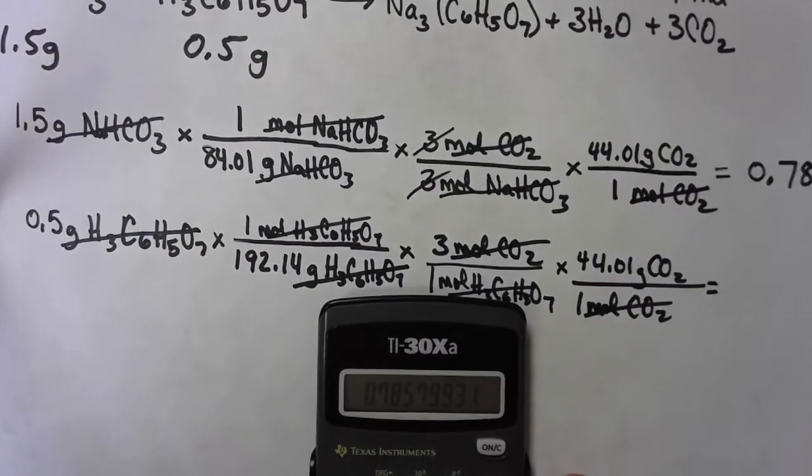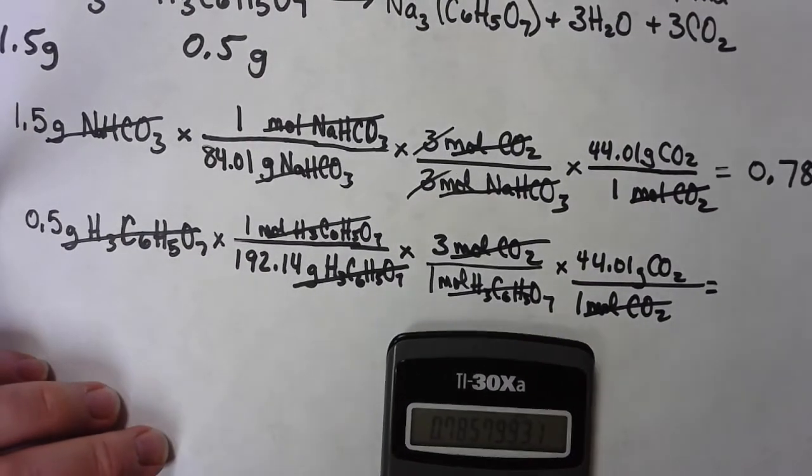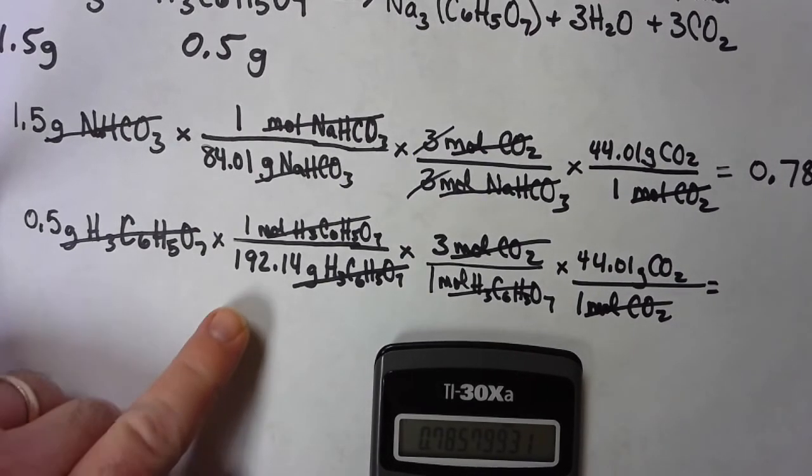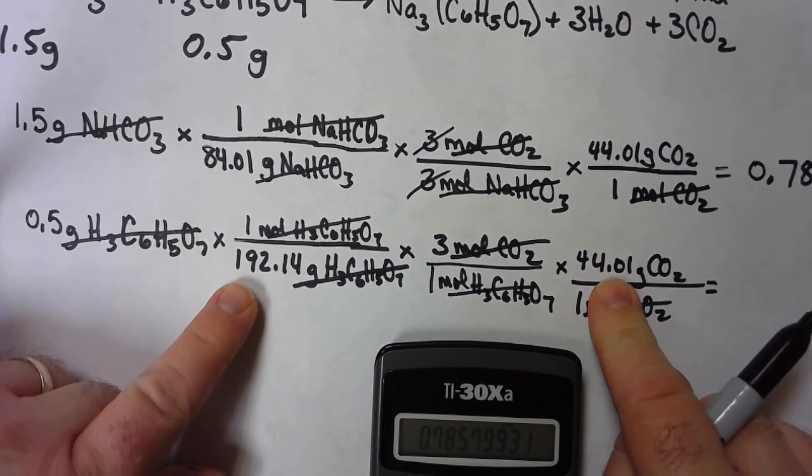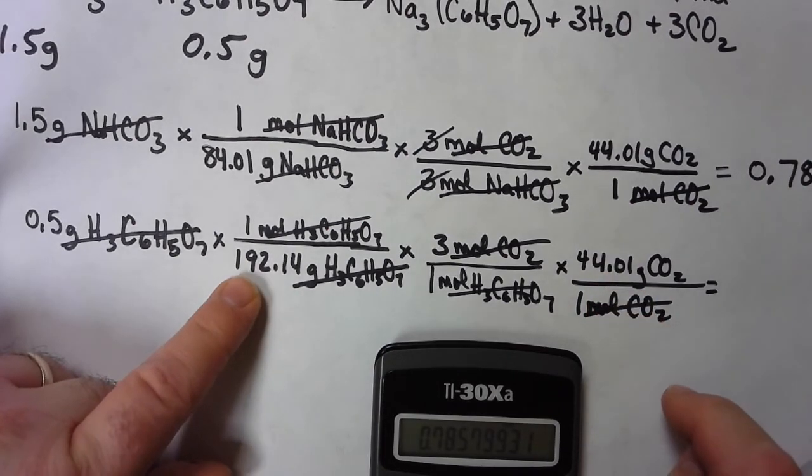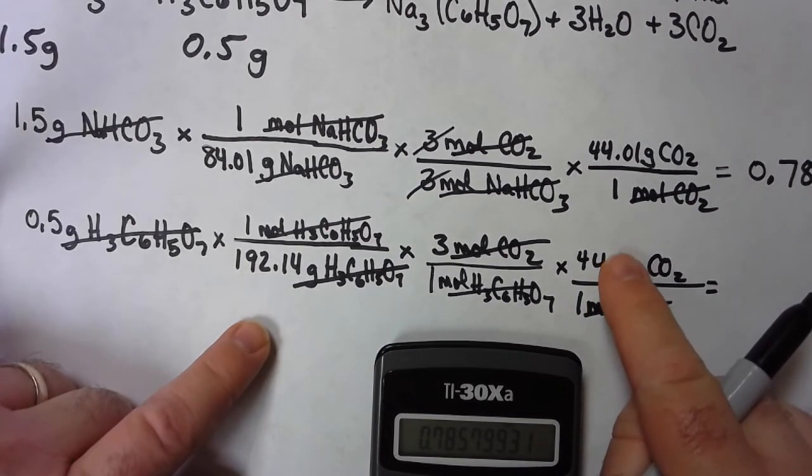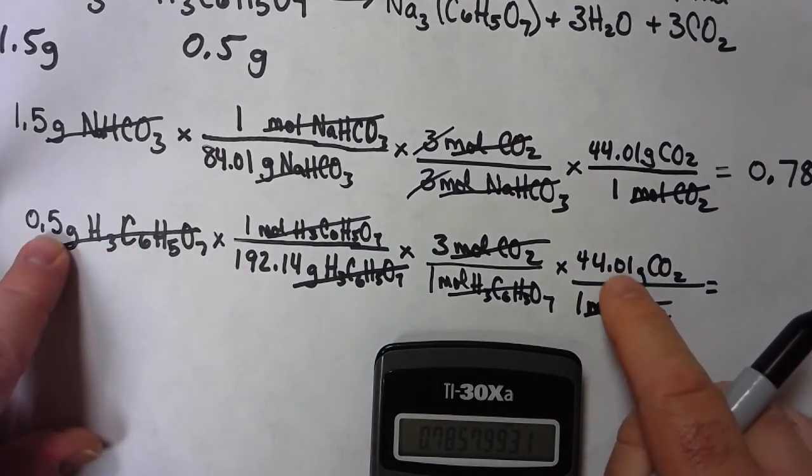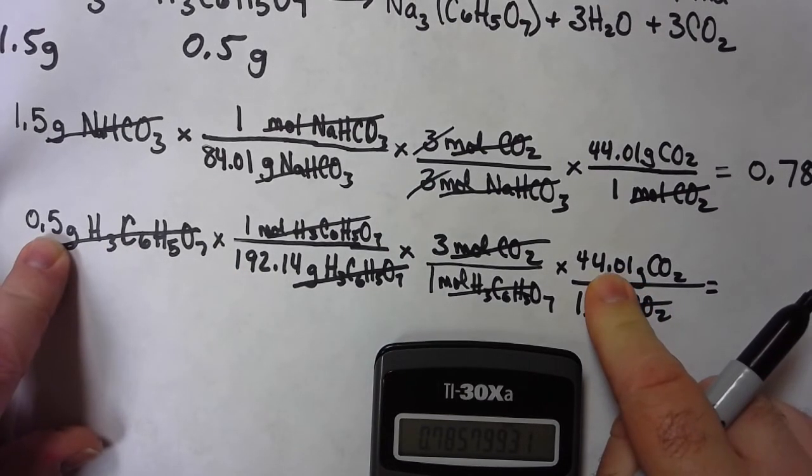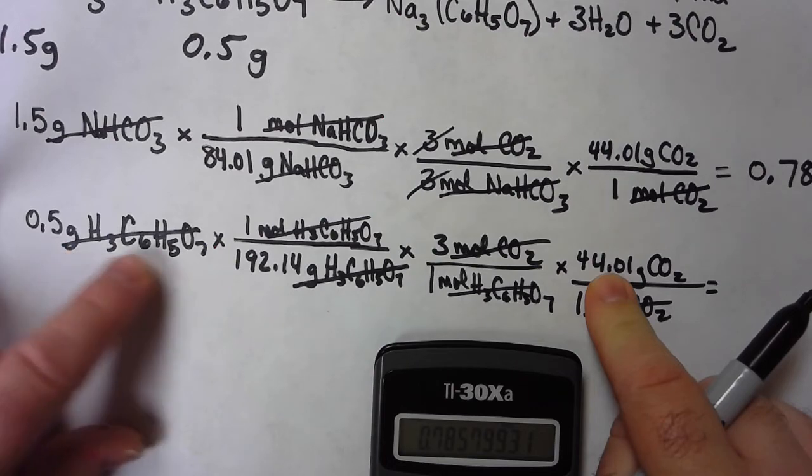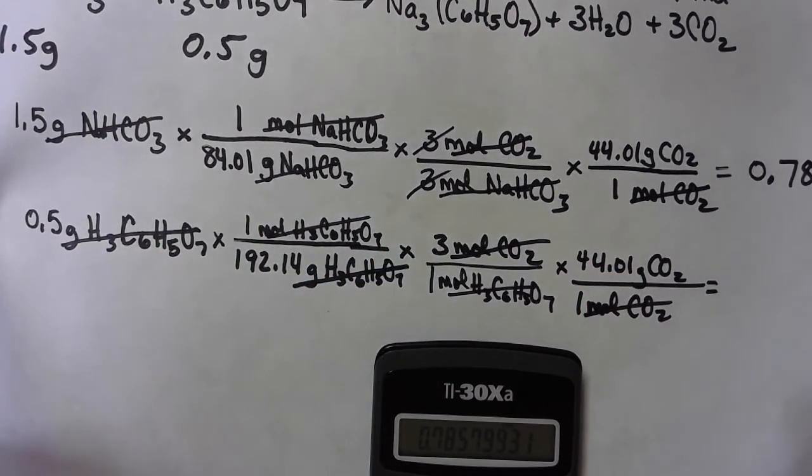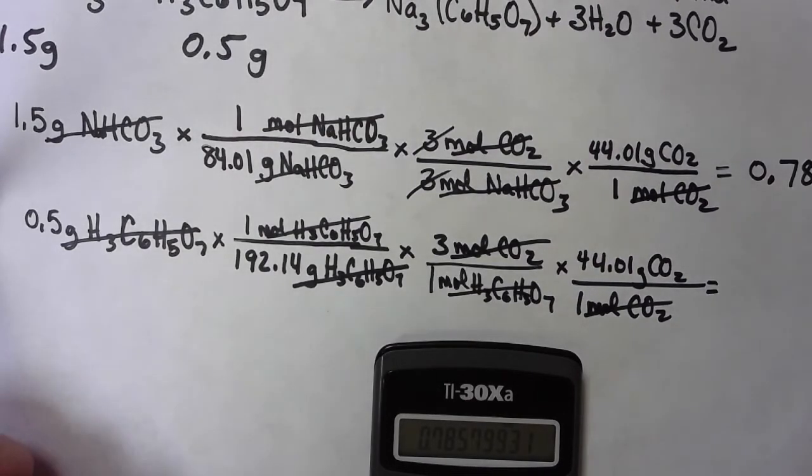So here we go. We should estimate again, shouldn't we? So here is 44. Here's 192. Well, that's getting awfully close to 200. And if this was 40, and this was 200. Well, if 0.5 times 40, that's about 20. 20 over 200, that's about 0.1. So about 0.3. That's my guess. I could be way off. But my hunch is around 0.3.